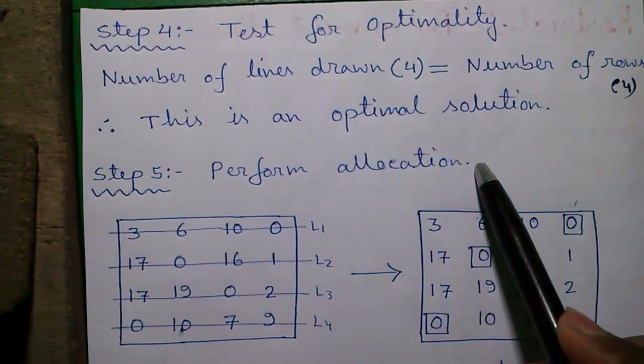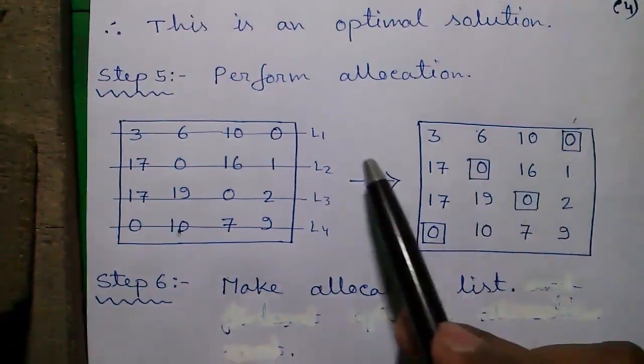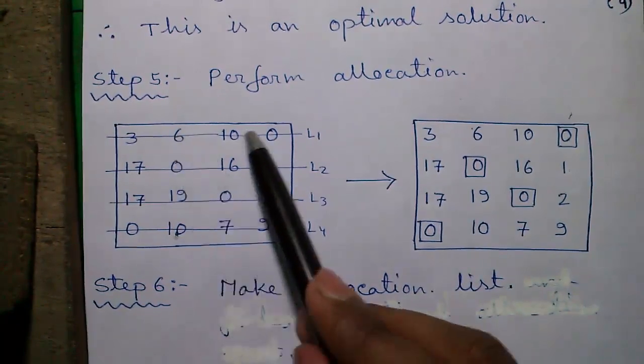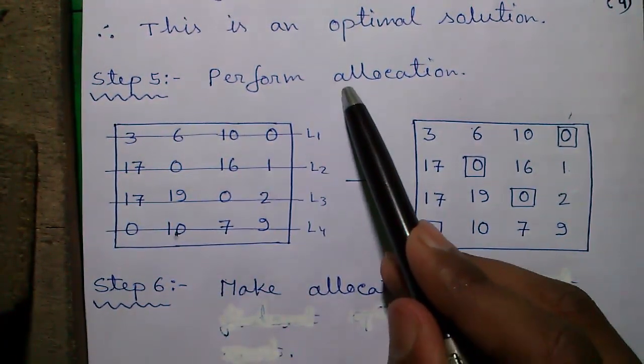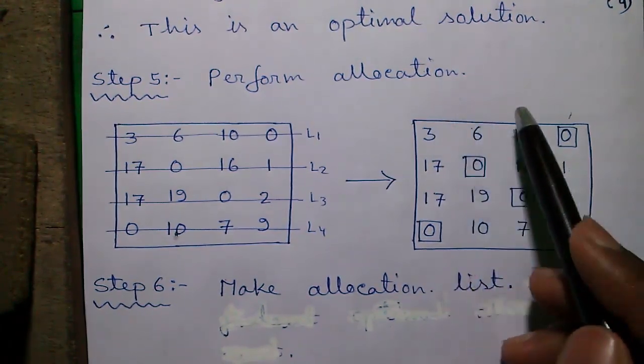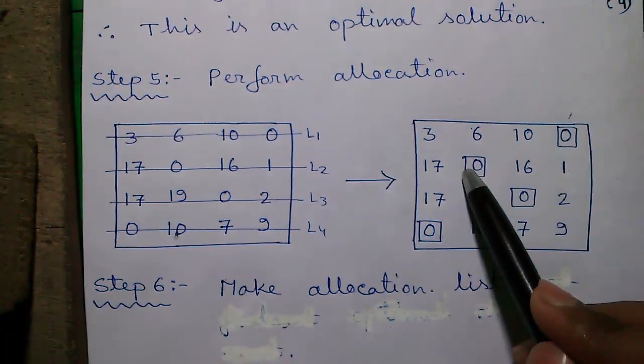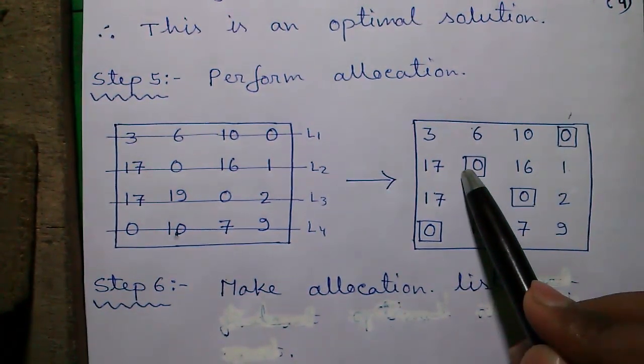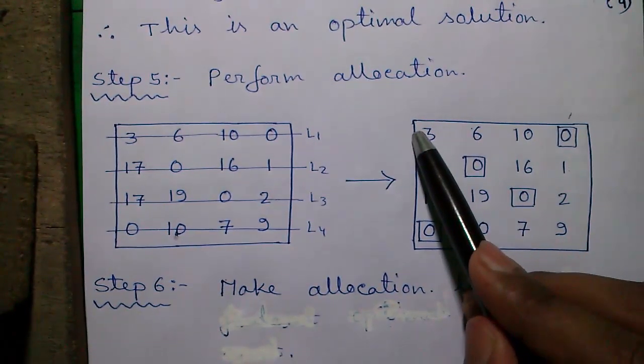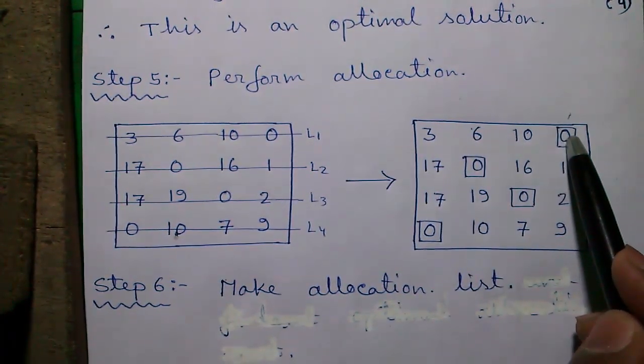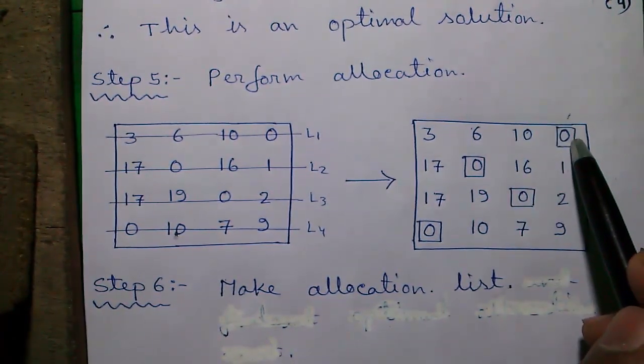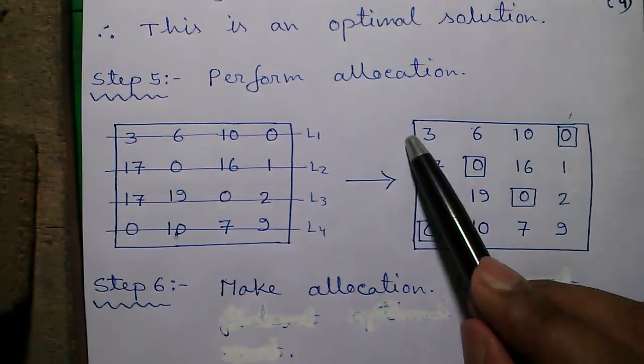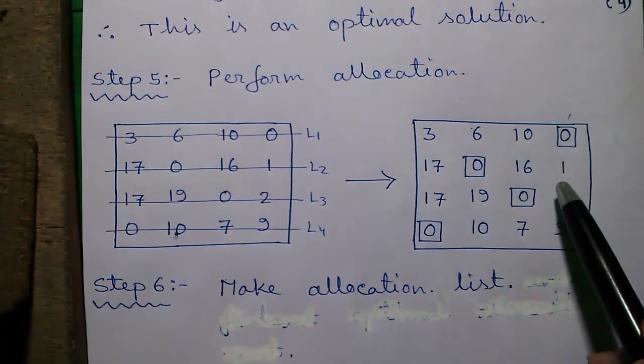Perform allocation. Since it's an optimal solution we will now perform the allocation. So here I have rewritten the matrix from the last step. And for allocation that is covering 0s with a box, there is a rule. The rule is first we will do our first allocation in that row or that column which has exactly one number of 0. So here luckily in each row and each column we have exactly one 0.